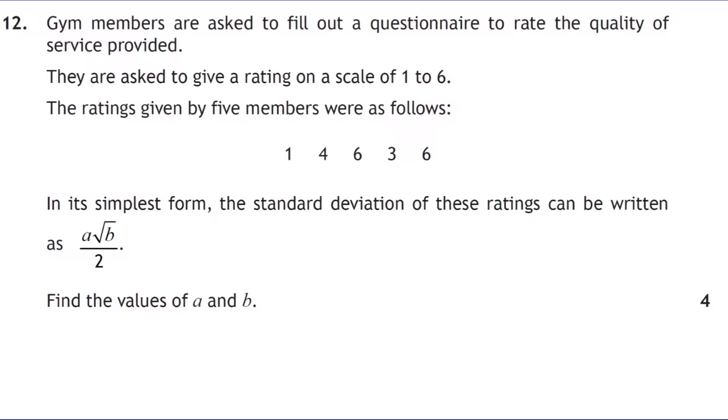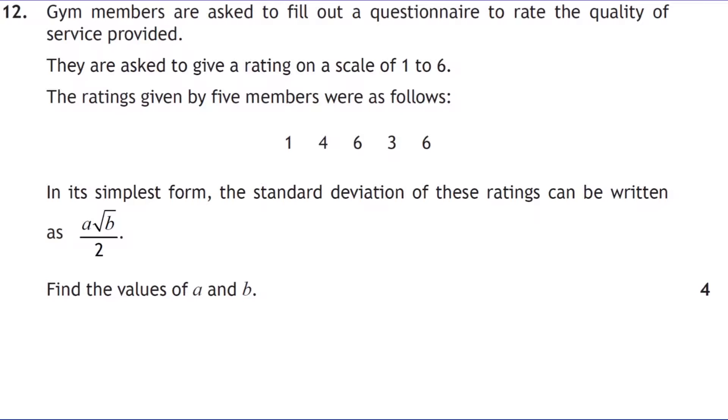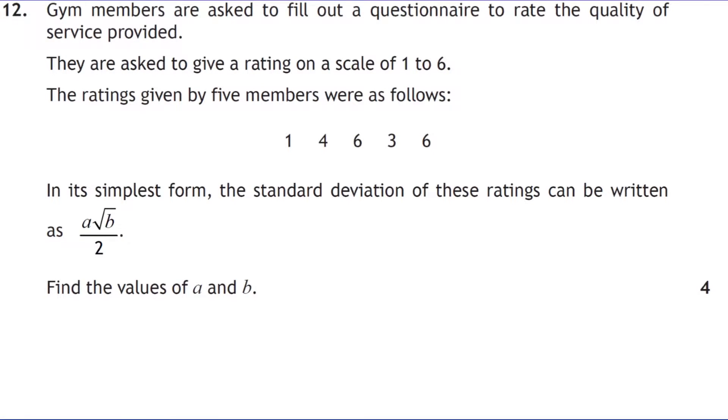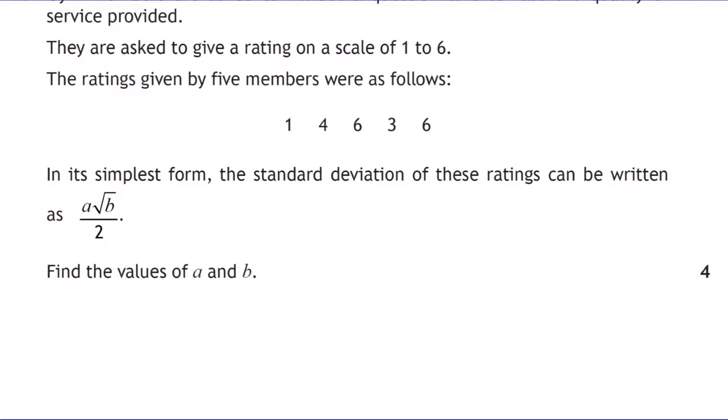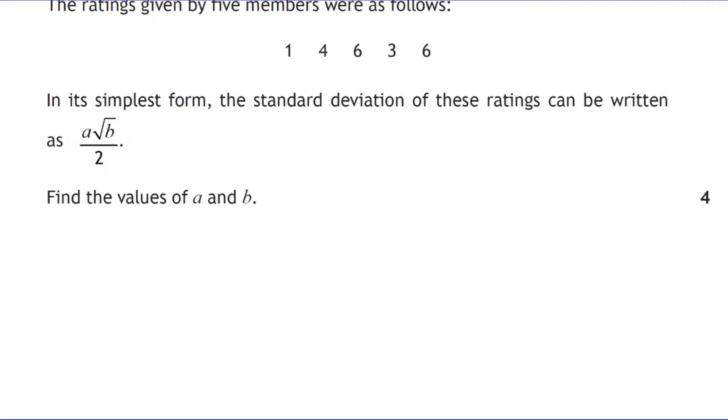Gym membership. Calculate the standard deviation can be written in this form. So a non-calculator standard deviation question. Five members, find the values of a and b. So it's asking us to calculate the standard deviation. We go through the same process as we normally would. We find the mean. There are different methods for finding standard deviation. If you use the other one, it should give you the same answer. The working just might look slightly different. So 1 add 4 is 5 for the mean. That's 6 is 11, 14, 20. So we get 20 divided by 5, which is 4. And we're hoping it's a nice number because we have to do this non-calculator.